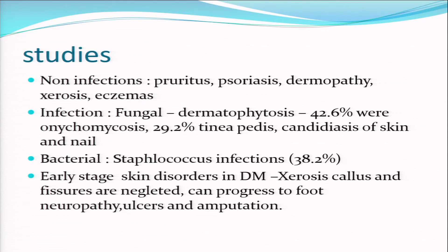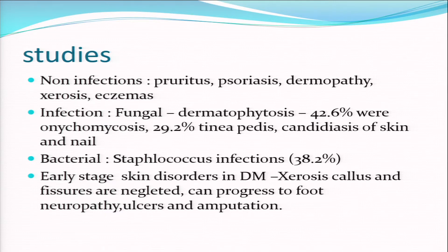The next most common is tinea - most patients will have tinea. We need to look into that. Candidiasis of the skin and nail is very common. A man with a tight foreskin, paraphymosis, or fissuring of the foreskin is a feature of candidal balanoposthitis - check the blood sugar, it will be high. That's a marker of early diabetes. Staphylococcal infection rules the list and is commonly seen in every diabetic, ranging from simple pyoderma to furuncle, abscess, cellulitis, and erysipelas.